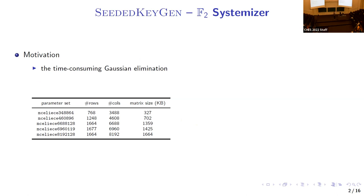The central computation in public key generation is computing the systematic form of a binary matrix — the F2 systemizer. Because the matrix is hundreds of kilobytes or one megabyte, this process is very time-consuming. Systemization might fail whenever the input matrix cannot be reduced to systematic form, requiring generation of another matrix. On average, Classic McEliece requires 3.4 attempts to successfully compute the public key.